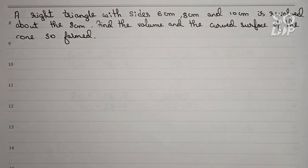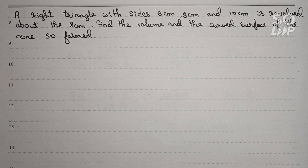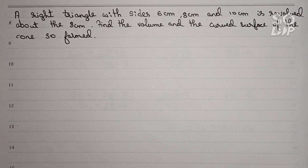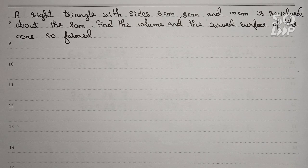Hello guys, welcome to this video. In this video our question is: a right triangle with sides 6 centimeter, 8 centimeter, and 10 centimeter is revolved about the 8 centimeter side. Find the volume and the curved surface area of the cone so formed.